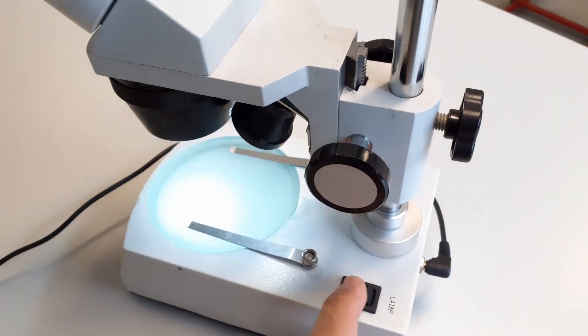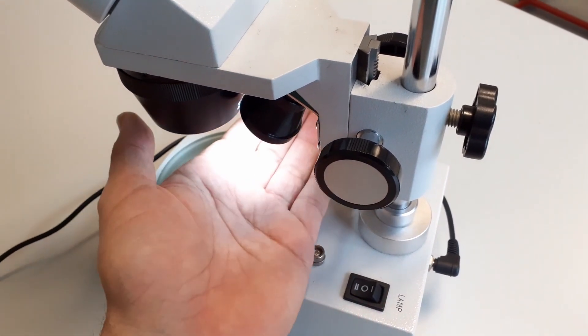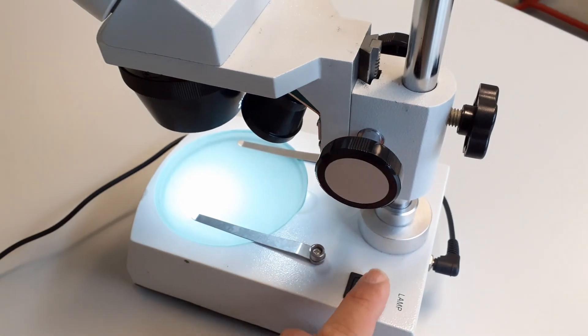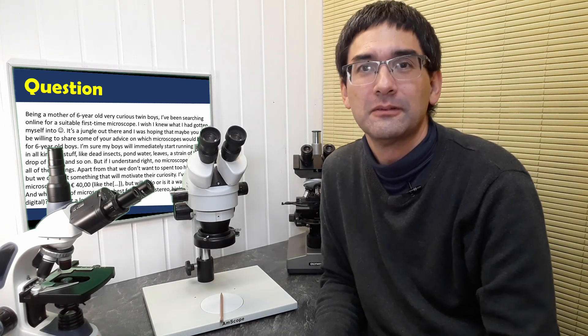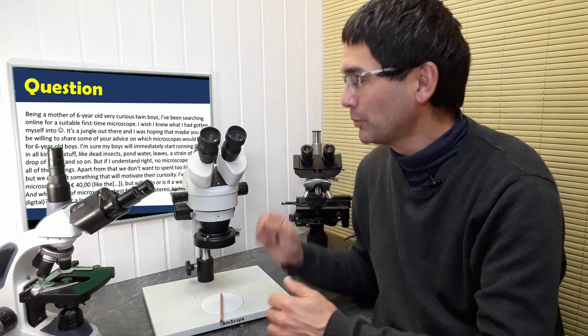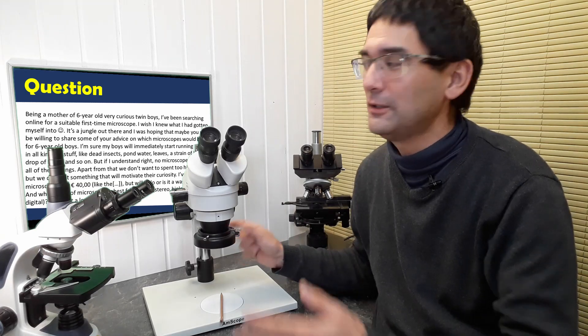But the important thing here is the following. If you want to look at an object, any object, insect, plant material, this pencil here, all you have to do is you take the object and you put it on the stage of the microscope, you switch on the light, and then you look at it.